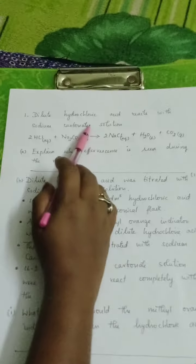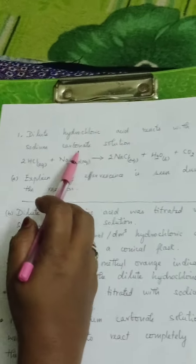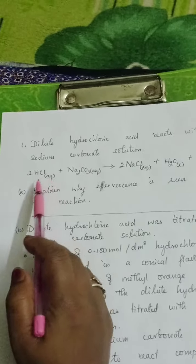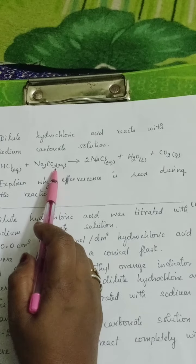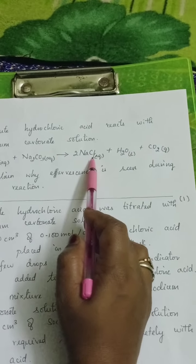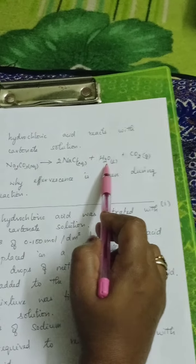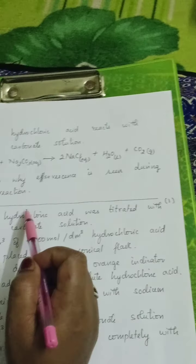Dilute hydrochloric acid reacts with sodium carbonate solution. Two moles of HCl react with one mole of sodium carbonate, which gives two moles of NaCl, one mole of water, and one mole of carbon dioxide evolves.